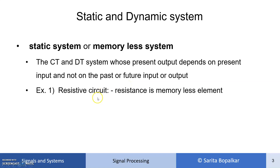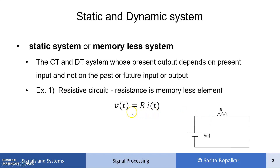Let's take an example: a resistive circuit. Resistance is a memory-less element. If you find the voltage or current across a resistor, V(t) = R·I(t). When you want to find the voltage across the resistor at any instant of time, it depends upon what is the present current into the resistor. So present output depends on present input — not on what the past current flowing through the resistor was.